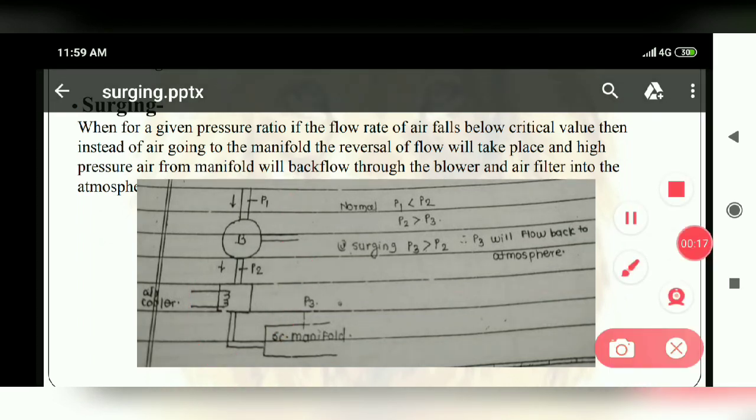Now normally what happens, when your air flow will be high pressure to low pressure. So P2 will be high and P3 will be low, so flow is like this. Now you will see what happens in surging. In surging, P3 is more than P2, so reverse flow.